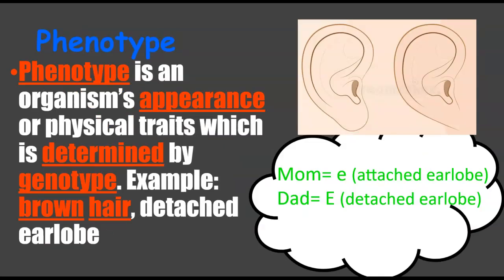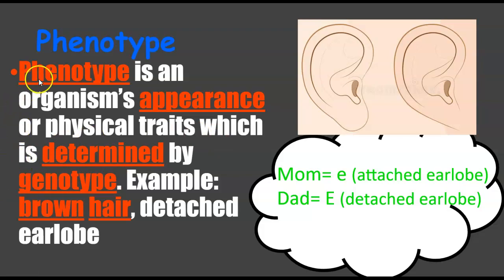Phenotype is an organism's appearance — the thing you can see with your eyes, or a physical trait. I use 'pheno' and 'physical' to keep them in order. A phenotype is determined by the genotype — the genes are the instructions that determine what it's going to look like, and your phenotype is what you're actually showing. Examples include brown hair or detached ear lobes.